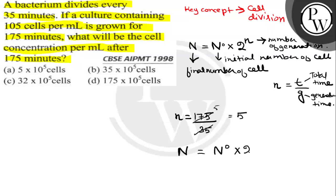N equals N naught into 2 to the power n. This capital N is the final number of cells which we have to find out. N naught is given, that is 10 to the power 5 cells, and small n we have already found out, this is 2 to the power 5. So final number of cells are 2 to the power 5 into 10 to the power 5, which is given in this option.